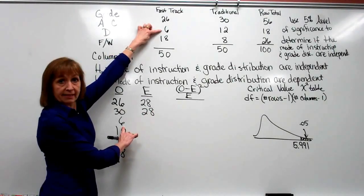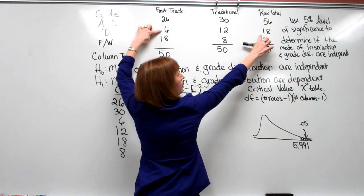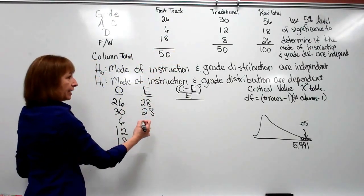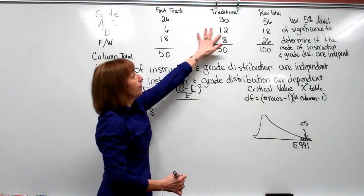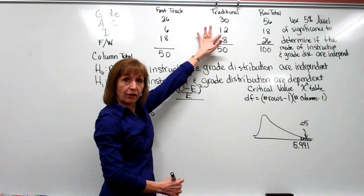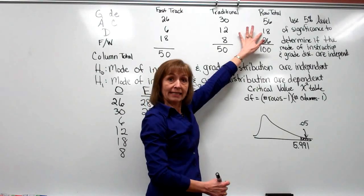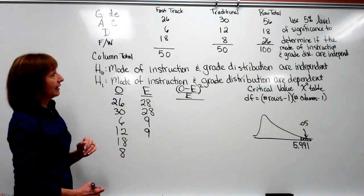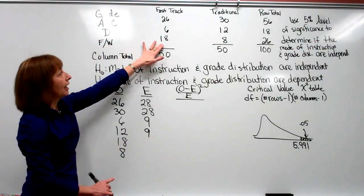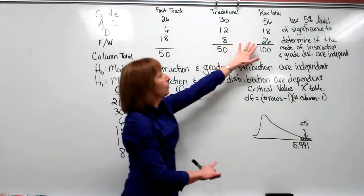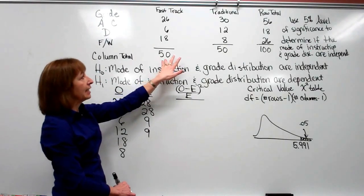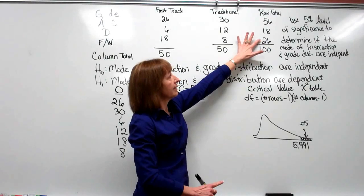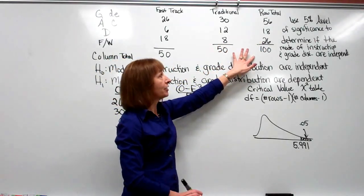For the entry of 6 (fast track, grade D): row total 18 times column total 50 divided by 100 gives 9. For the observed value of 12 (traditional, grade D): row total 18 times column total 50 divided by 100 also gives 9. For the observed value of 18 (fast track, F or W): row total 26 times column total 50 divided by 100 gives 13. And for the last entry (traditional, F or W): row total 26 times column total 50 divided by 100 gives 13.